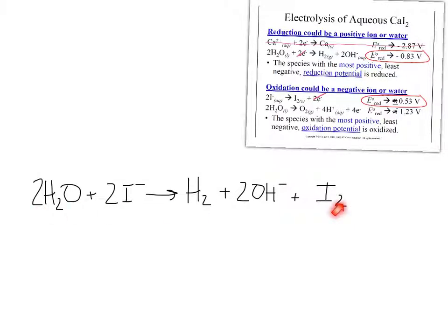This is a non-spontaneous reaction, but since we're driving it with an electrical current, it will occur. We're going to observe H₂ gas — so we'll see bubbles. We're generating OH⁻, which is basic, so the solution becomes more basic over time. And we're making I₂, which is a solid. All three of those are generated when we drive it with an electrical current.